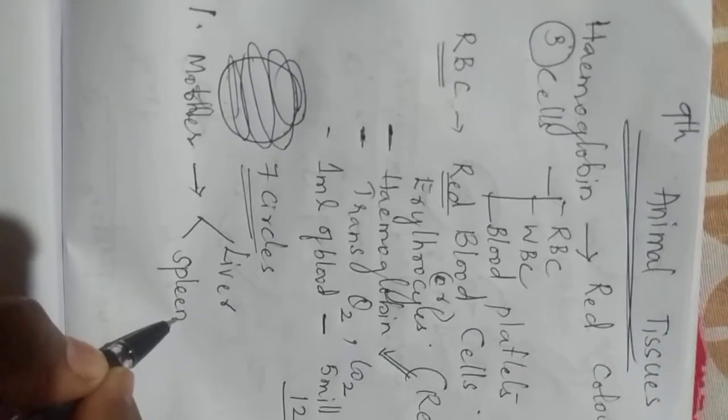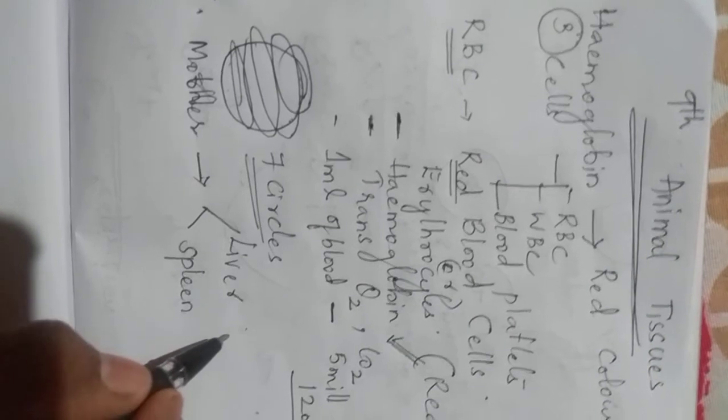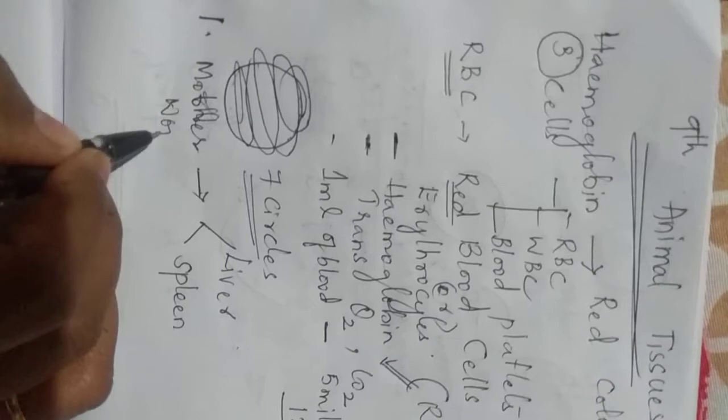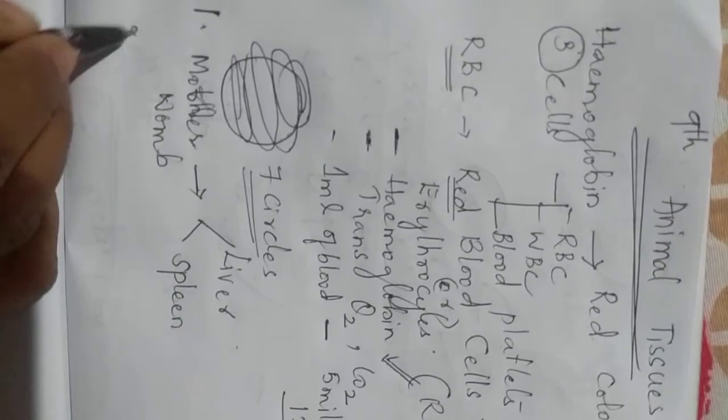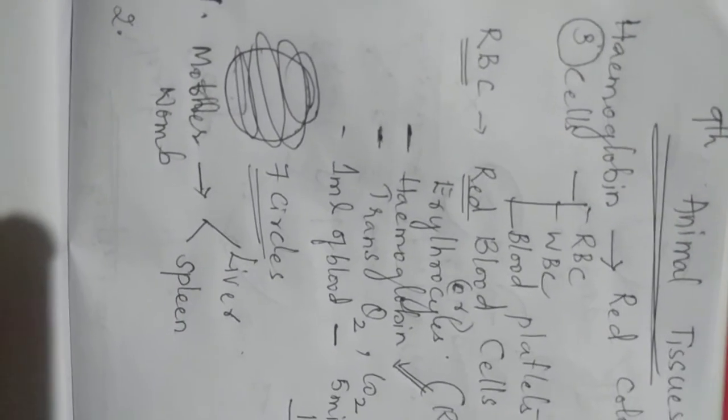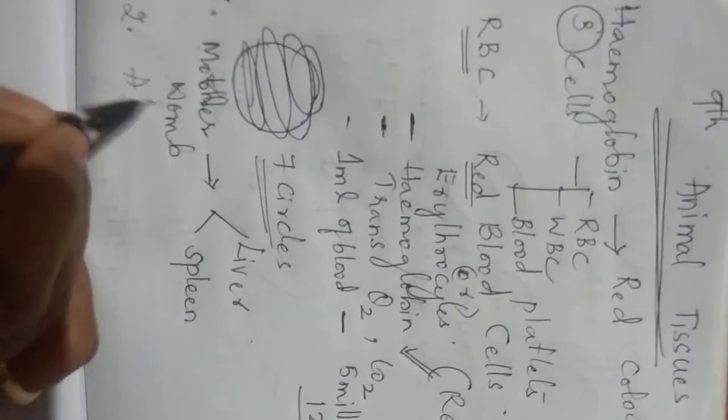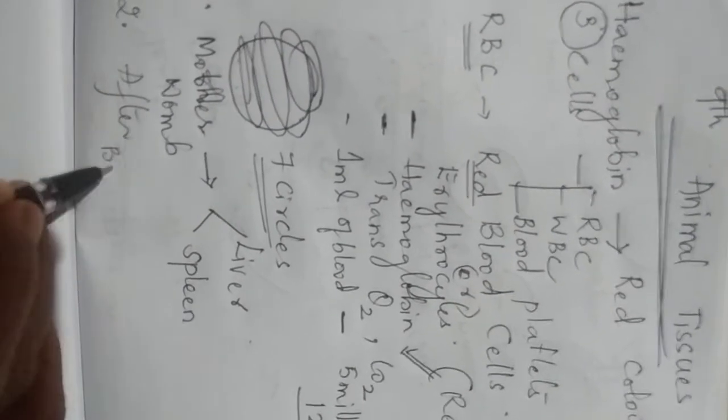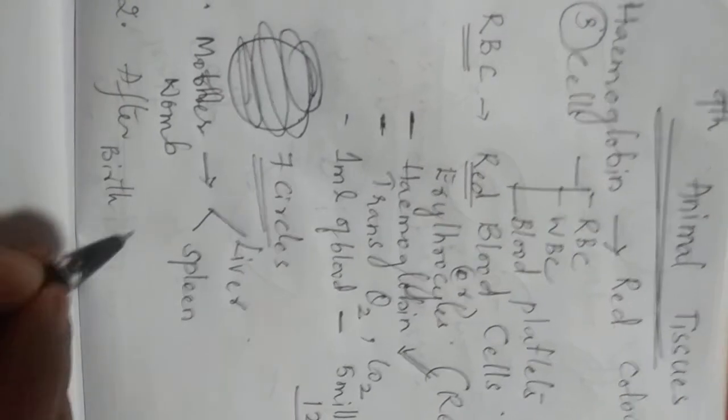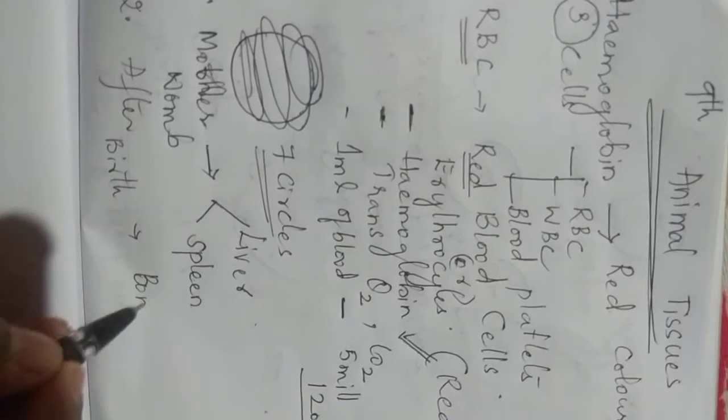Liver and spleen are two organs where RBC will be produced in your mother's womb. After birth, after delivery, that is when you come out of your mother's womb, RBC will be produced in bone marrow. You know what is bone marrow?